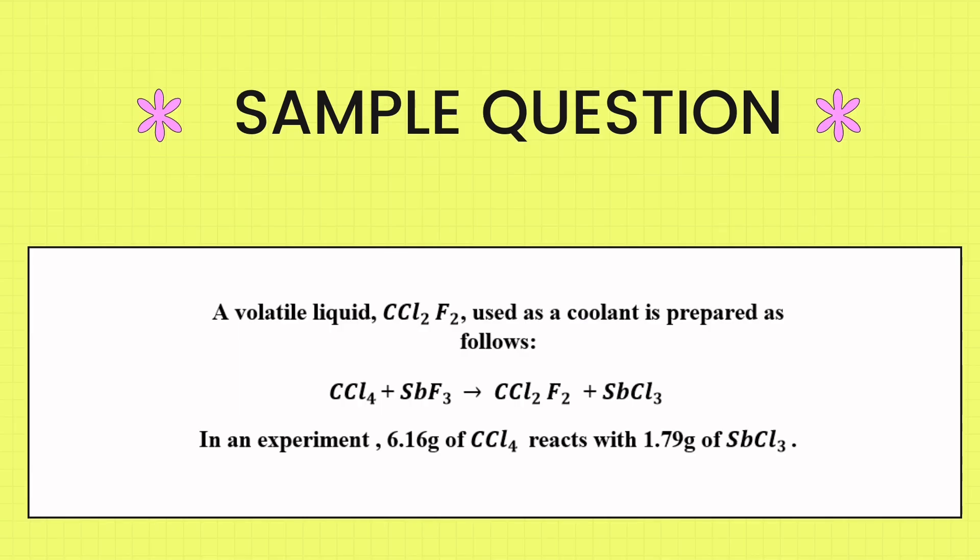Sample Question: A volatile liquid, CCl2F2, used as a coolant, is prepared as follows. CCl4 plus SbF3 produces CCl2F2 plus SbCl3. In an experiment,